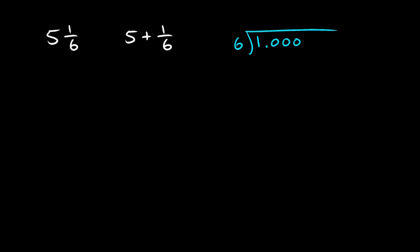Well, 6 doesn't go into 1. So, we look at the next two digits, 10. We're going to have a decimal point right there above that one. And 6 goes into 10 one time. 1 times 6 is 6. We subtract. 10 minus 6 is 4. And then we bring down this 0. And that's 40.